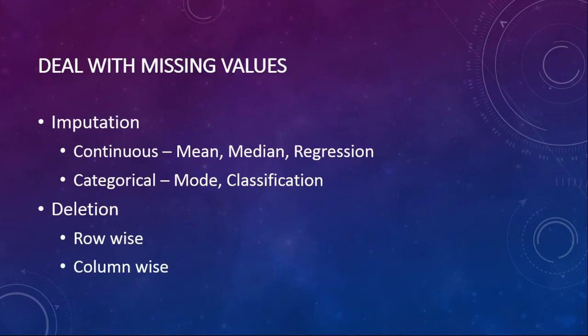Now we need to deal with the missing values. We have two methods: one is called imputation and another is deletion. For imputation, with continuous variables we can find the mean, median, or use regression; for categorical variables we can find the mode or use classification.